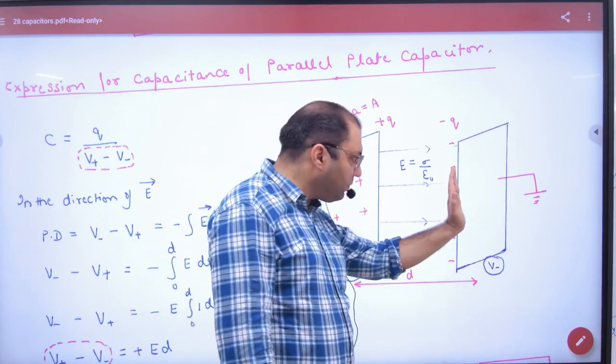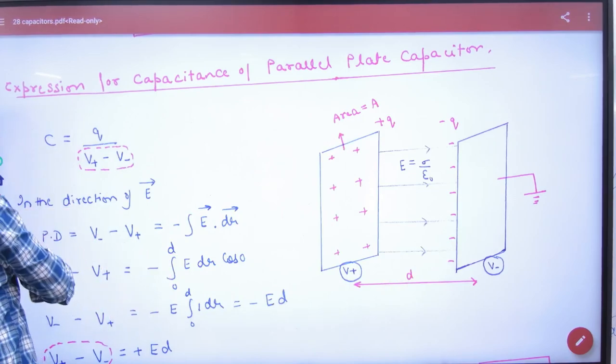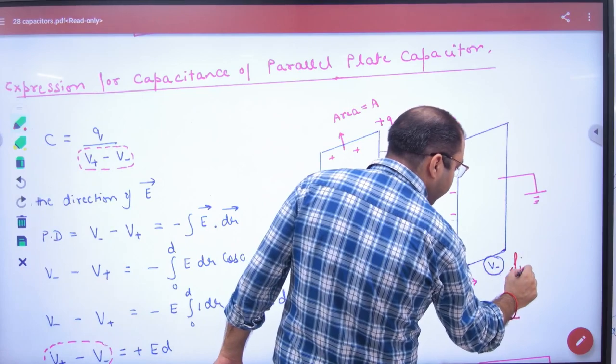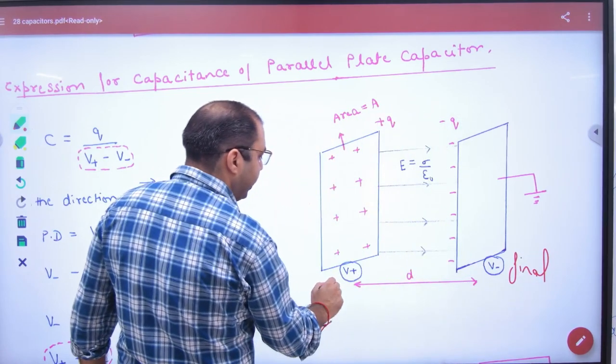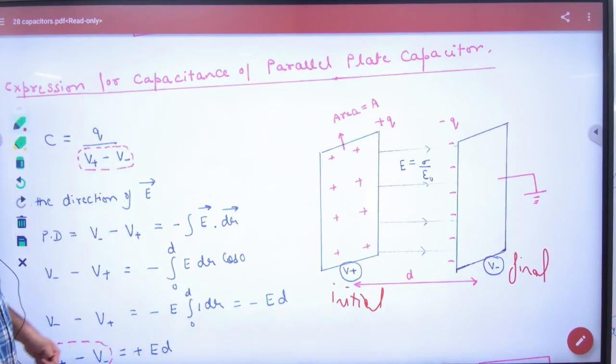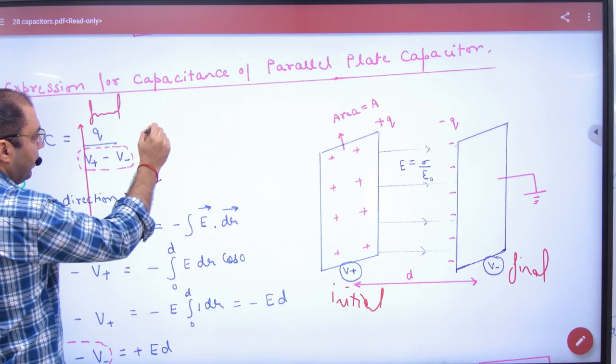What do we call final and what would we call initial? So this definition uses the concept: final minus initial. Clear here, so final potential minus initial.